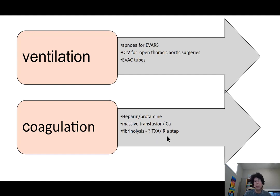Getting the Resteq or fibrinogen concentrate up to the OR in advance of bigger cases, and checking your fibrinogen at the start to know your baseline, is also good practice. We use albumin in these cases as part of our volume resuscitation protocol — 5% in 500 mL bottles can also be ordered in advance.